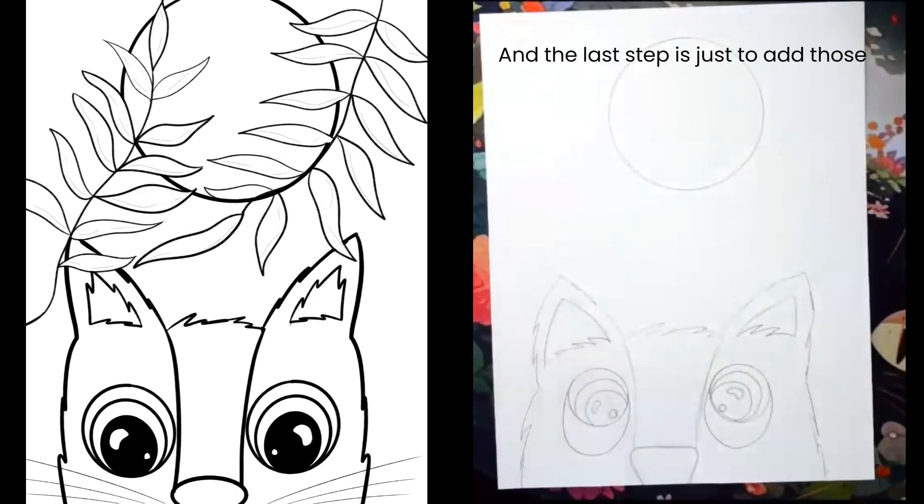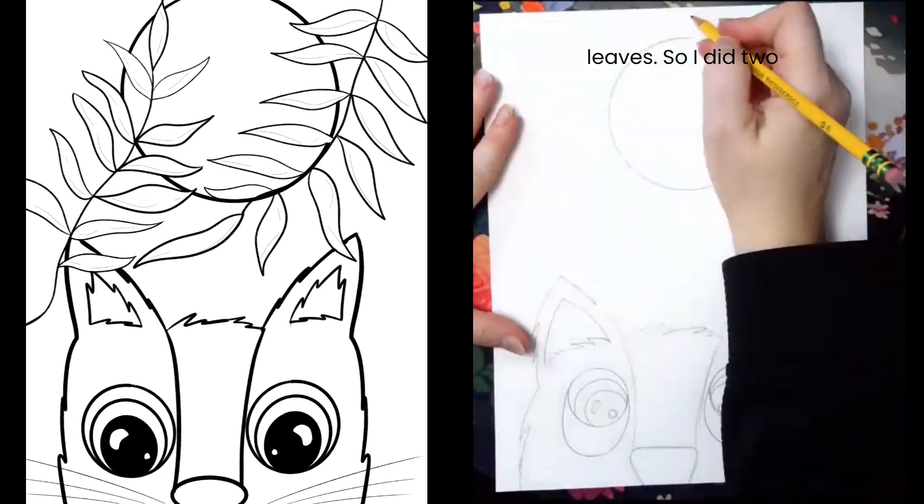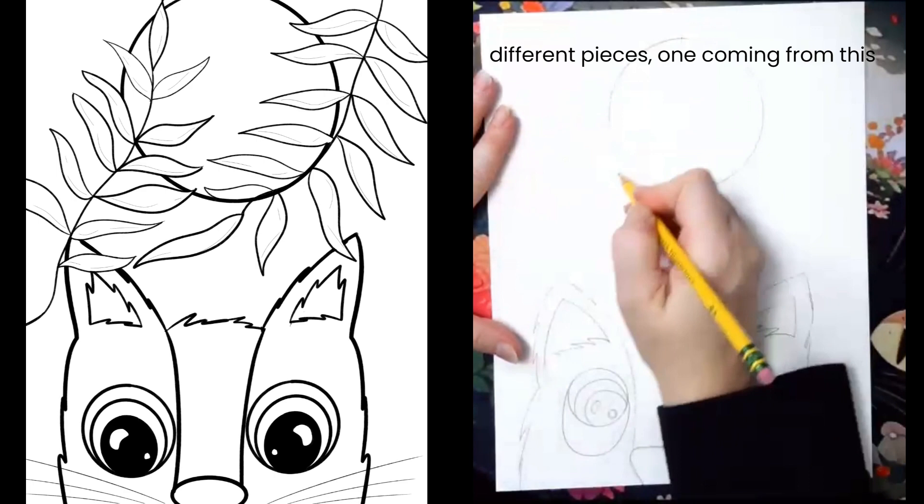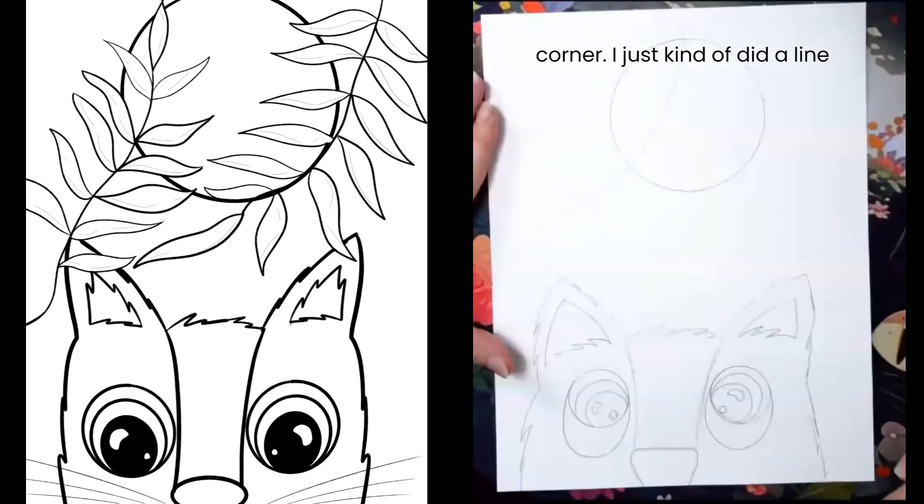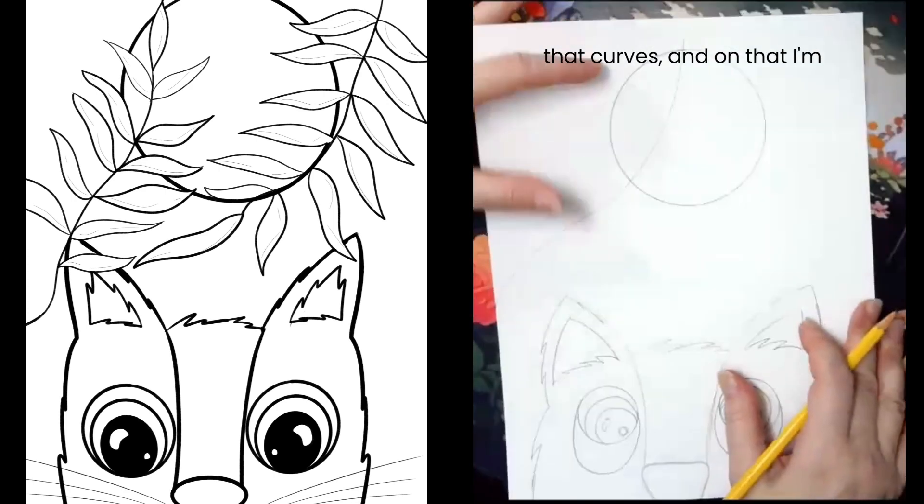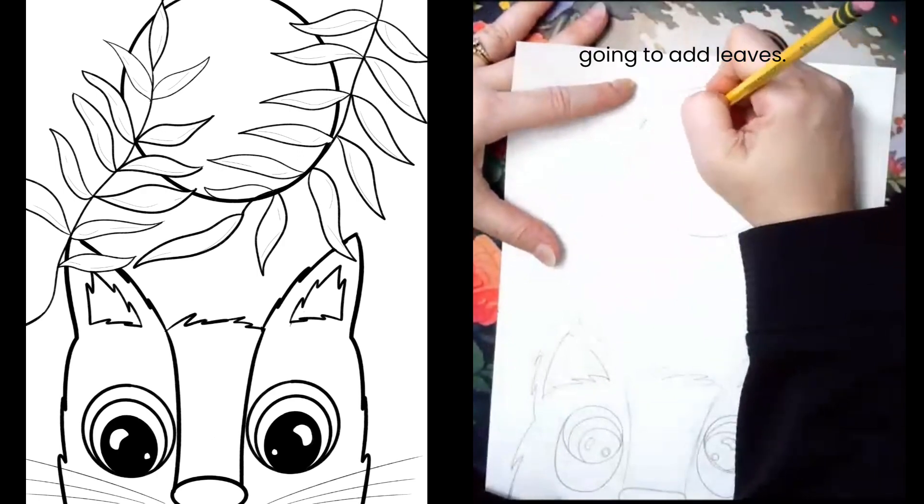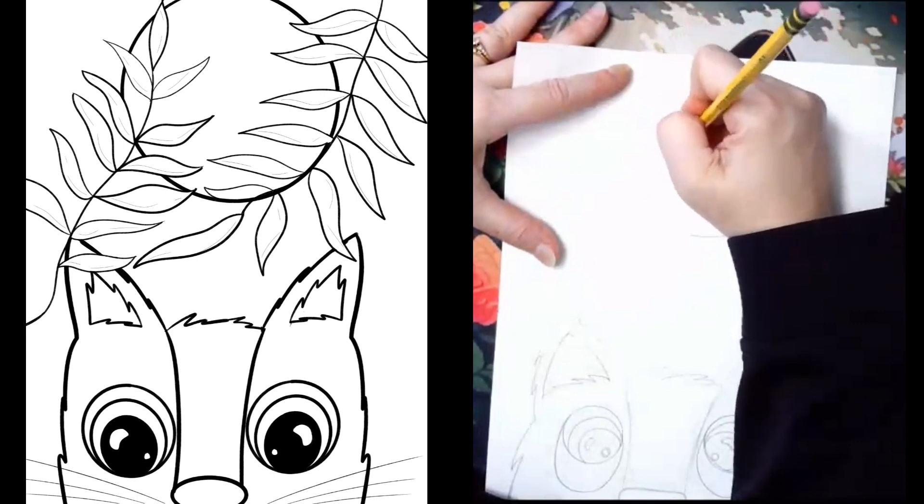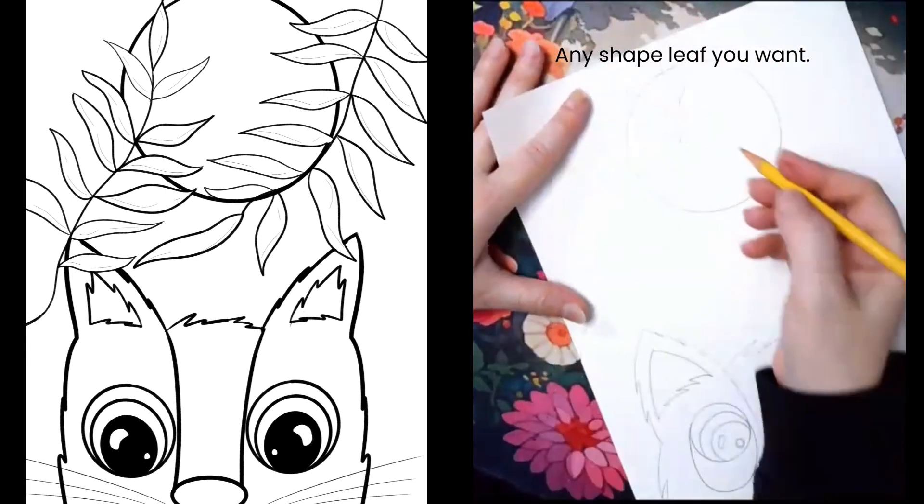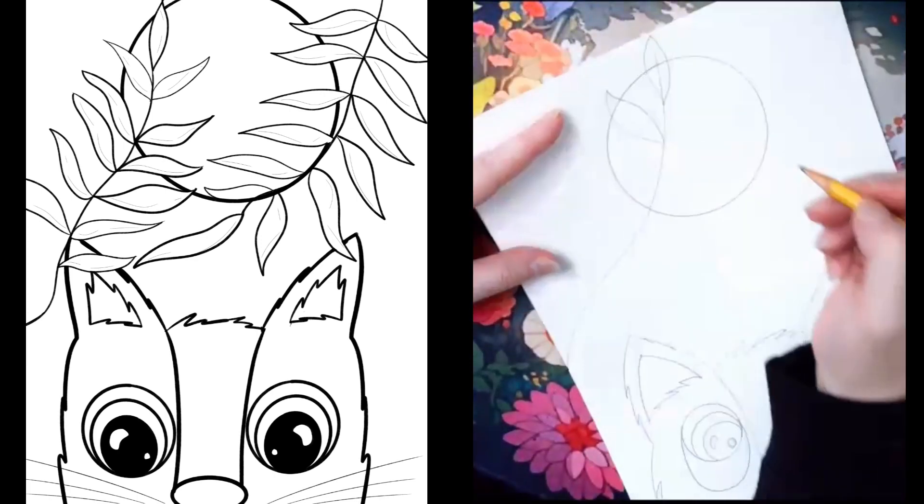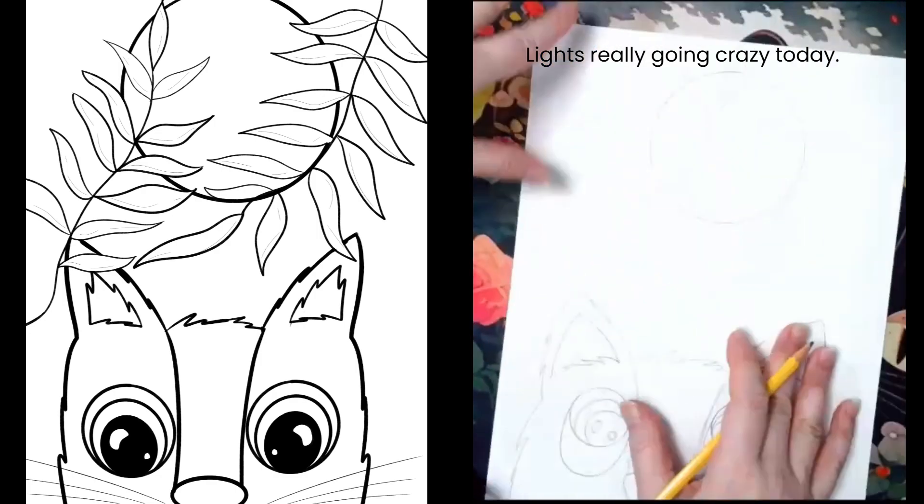And the last step is just to add those fun viney leaves. So I did two different pieces, one coming from this corner. I just kind of did a line that curves and on that I'm going to add leaves. Any shape leaf you want.